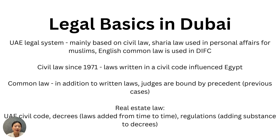The UAE legal system is based mainly on civil law, and Sharia law is used for personal affairs for Muslims. English common law is used in the DIFC. The civil law was created in 1971 and was written based on the civil code that already existed in Egypt, which was one of the most advanced civil codes in the Middle East at the time. Dubai's real estate law is a mixture of the UAE civil code, decrees which are laws added from time to time, and regulations which add substance to decrees.